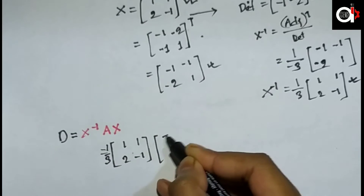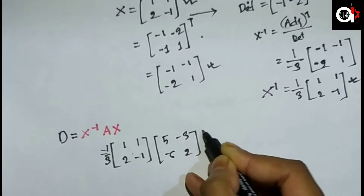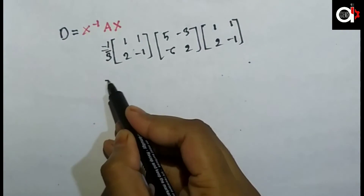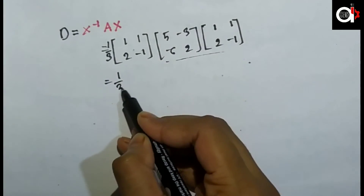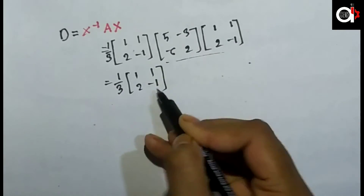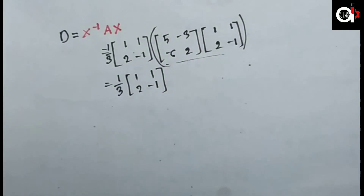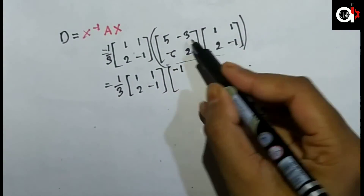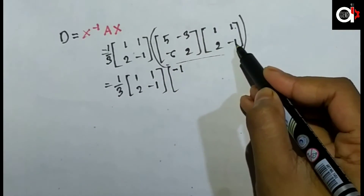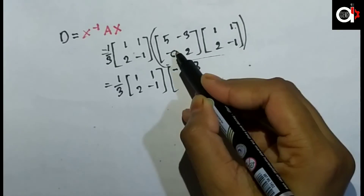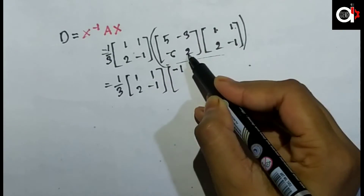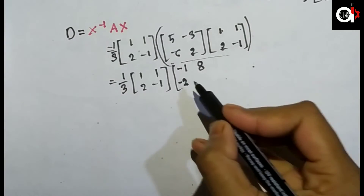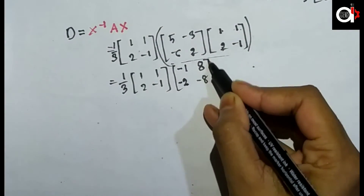We have X⁻¹ = (1/3)[−1, −1; −2, 1], A = [5, −3; −6, 2], and X = [1, 1; 2, −1]. Computing X⁻¹A: first row, first column: 5−6 = −1; first row, second column: −3+3 = 0. Wait — 5+(−3) giving 8; and second row gives −6+2 = −4, then −6×(−1)+2×(−1) = −2. After multiplication: we get the intermediate matrix [−3, 0; 0; 24] before dividing by −3.